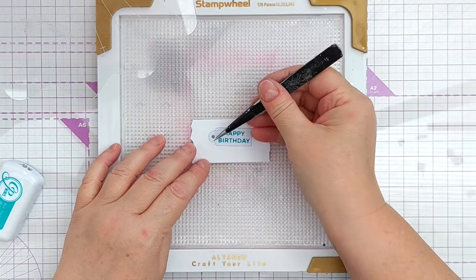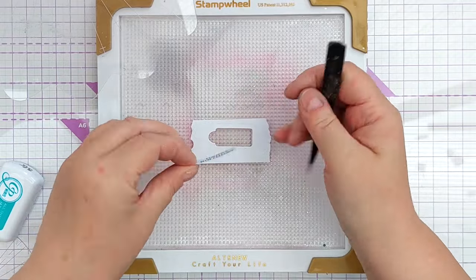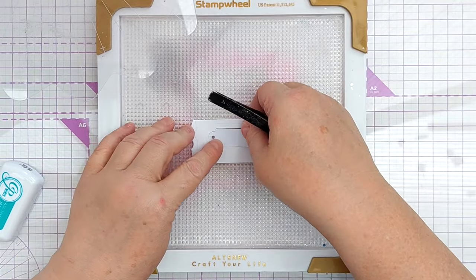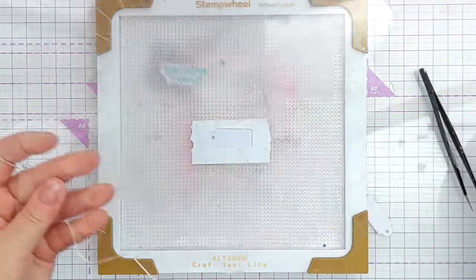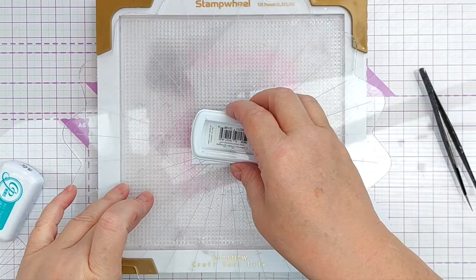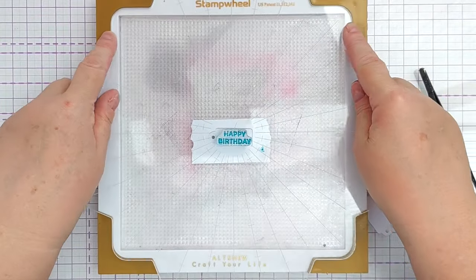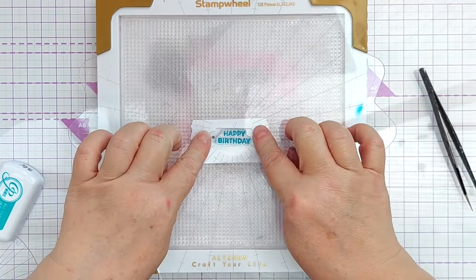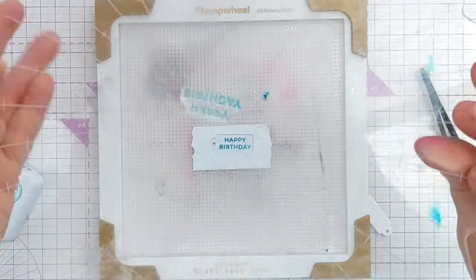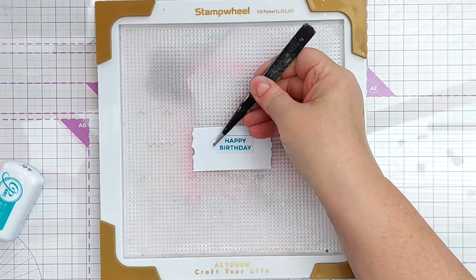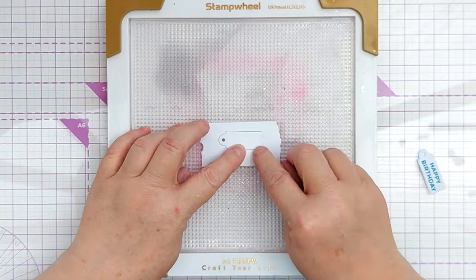Picked it up with the stamp positioner lid thing and then stamped the blue happy birthday in All That Jazz and I stamped on both sides of the tags and you'll see why in a minute. And then I took that tag out, put the other tag in and stamped on it both sides again in Party Dress.